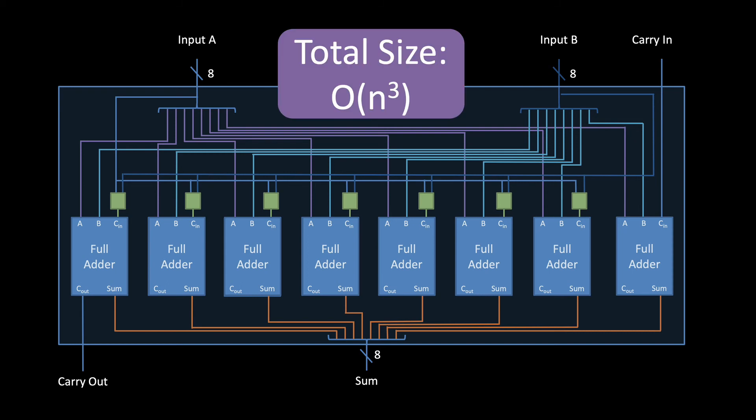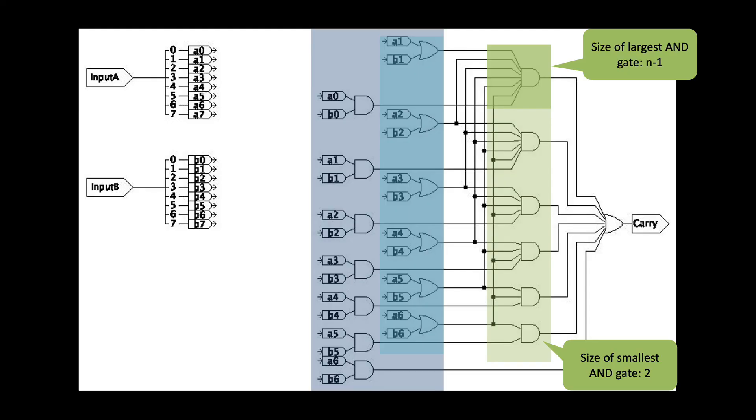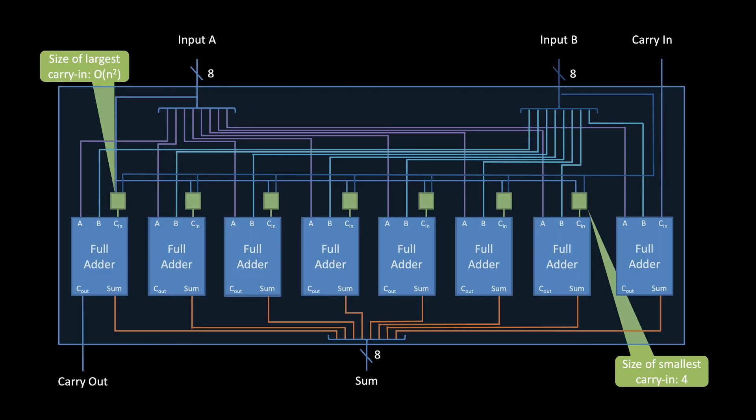Now, I'm hearing some objections that N cubed is way too big. After all, these AND gates get smaller as you move down the column, where the last AND gate only has two inputs. And likewise, the carry-in logic gets smaller as you move left to right, where the right-most carry-in logic only has four gates in it total. So common sense should say that this shouldn't be that bad, right? All of those small components have to help us out somehow. Well, not exactly.